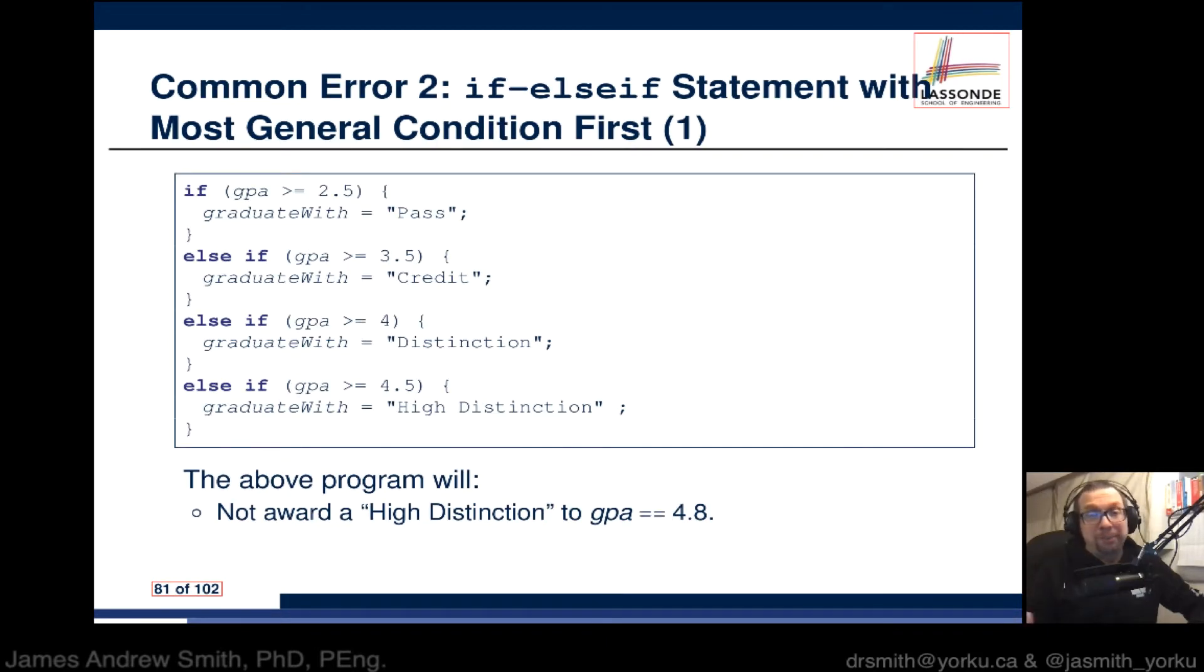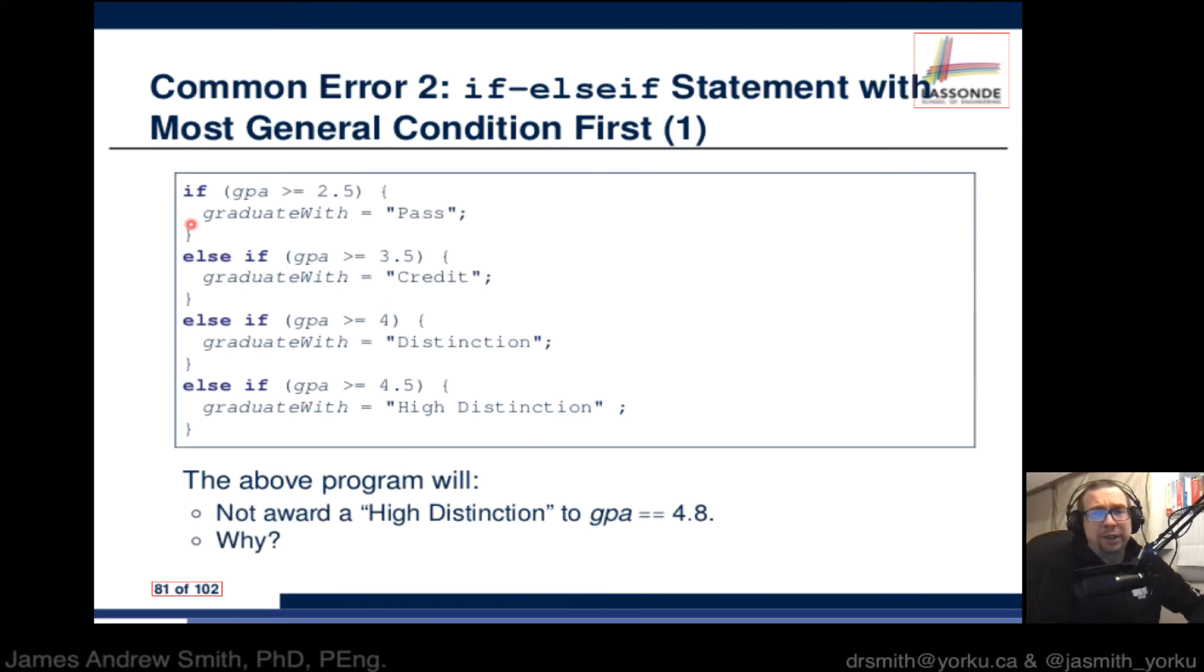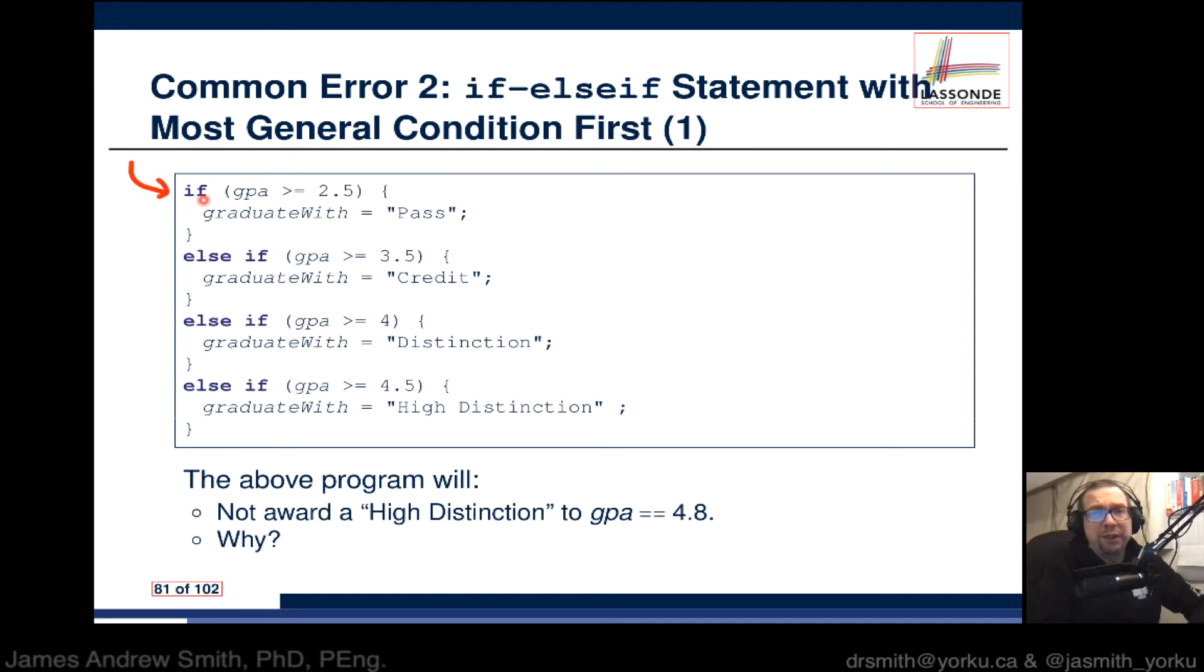Unfortunately, this program will not award a high distinction to a GPA of 4.8. The reason for this is that if the GPA is 4.8, then we get to this first if right here. We ask ourselves, is GPA greater than or equal to 2.5? It's 4.8, so absolutely. So the student passes. As soon as that happens, then this has been tested and executed.